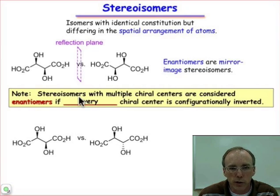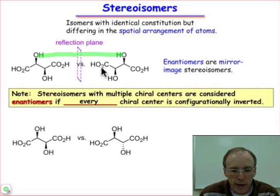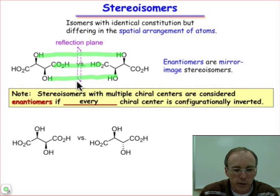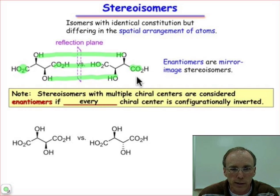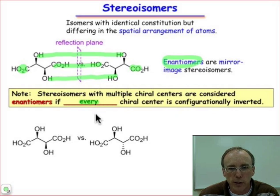They are related by a reflection plane. The reflection plane takes every atom on the left-hand side, translates it through that plane, and finds an equivalent atom on the right-hand side — the carboxylic acid groups, the hydroxyl groups, every carbon in the backbone — each equidistant through the plane with an exact partner on the right-hand side. Molecules which cannot be superimposed on one another but which are mirror images of one another are known as enantiomers. In the case of enantiomers, every stereocenter has changed its configuration — every R became S.